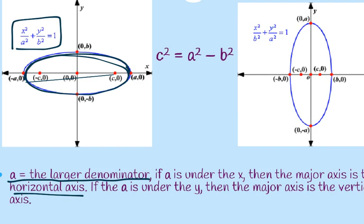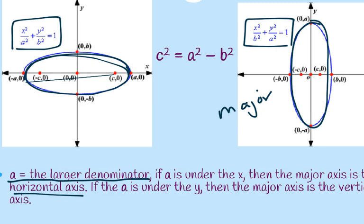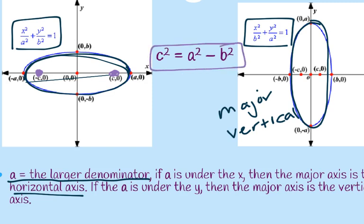If a is under the y, then the ellipse is taller than it is wide, and the major axis is the vertical one. So if the larger number is under the x, it's wide; if it's under the y, it's tall. The foci are at negative c, 0 and c, 0 if the center is at the origin. To find c, we do a-squared minus b-squared equals c-squared, then square root to find c.